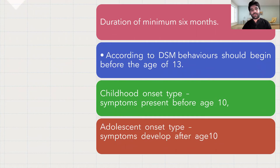According to DSM-5, the symptom must begin before the age of 13. DSM-5 subdivides Conduct Disorder into two types: childhood onset, which starts before the age of 10, and adolescent onset, which starts after the age of 10.